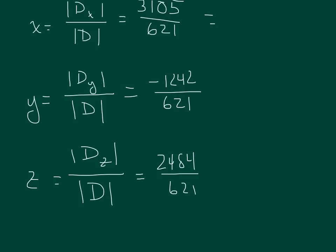Simplifying these, x equals 5, y equals negative 2, and z equals 4. So the final answer is (5, negative 2, 4). That is the solution to this equation solved by Cramer's Rule.